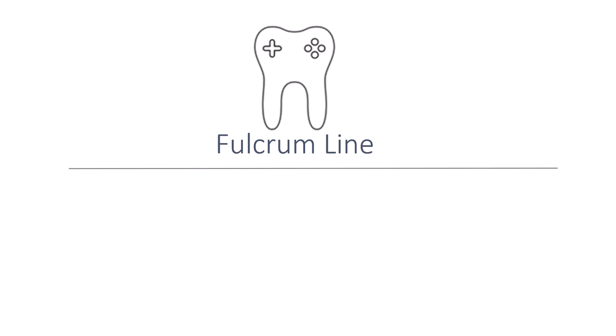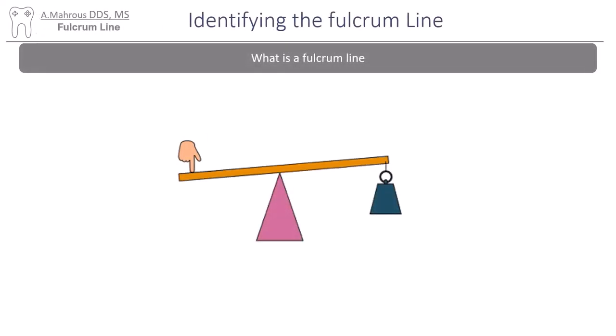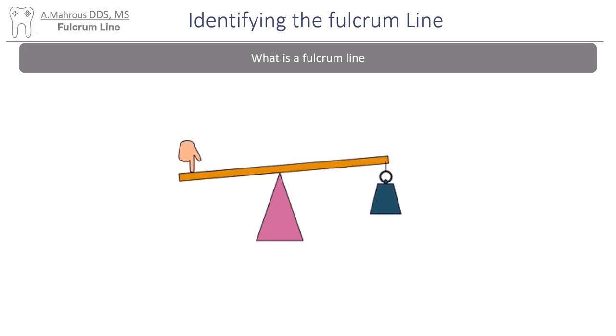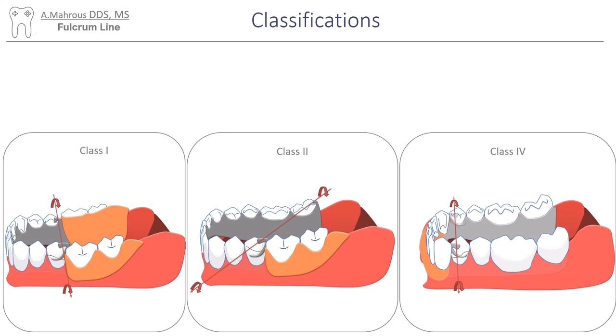Hello and welcome to another RPD video. Today we'll be discussing the fulcrum line. A fulcrum is a support on which a lever rotates. In RPDs, the fulcrum line is an imaginary line that connects the distal most rests of class 1, 2, and 4 RPDs.